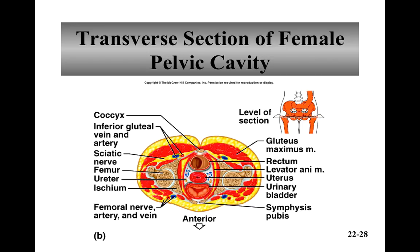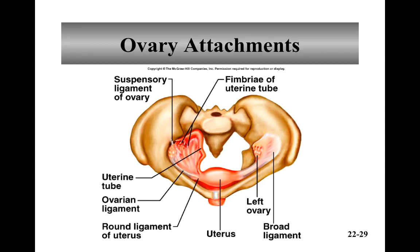Transverse section of the female pelvic cavity — this is more just to give you a reference for where the bladder, the uterus, rectum, and ureters are all oriented together.